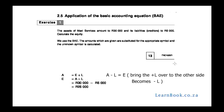The application of the basic accounting equation. Exercise 1, on page 13 of the PDF or the textbook. The assets of Maxi Services amounted to $30,000 and its liabilities, its creditors, to $5,000. Calculate equity. We use the BAE. The amounts which are given are substituted for the appropriate symbol and the unknown symbol is calculated. This is the BAE.